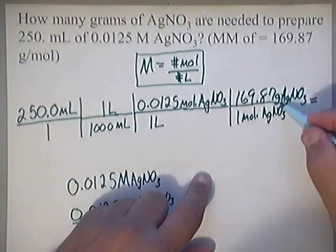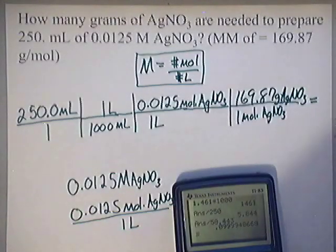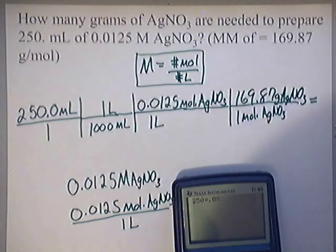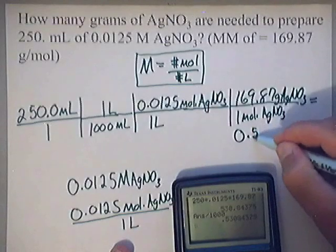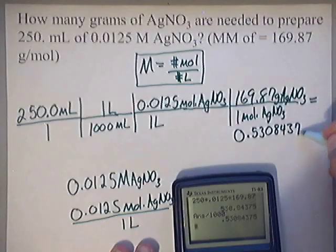Now, we need to punch that in our handy dandy calculator. Y'all said calculator. But they're a big help. So, that's 250 times 0.0125 times 169.87. That gives me 530.84375. Then I'm going to divide that by the only number I've got down here, which is 1,000. When I do that, that gives me the following. 0.53084375.